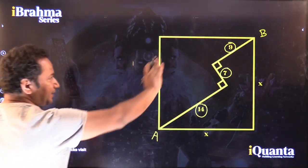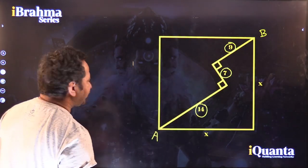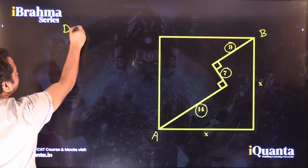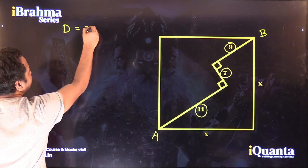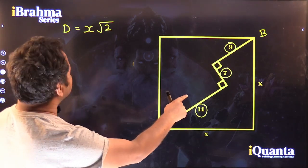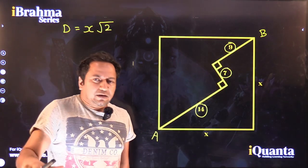So as you know that AB is nothing but the diagonal of the square and as we know that diagonal of a square is nothing but root 2 times the side of the square. So side is given as x, if I multiply x with root 2, I will get the diagonal.